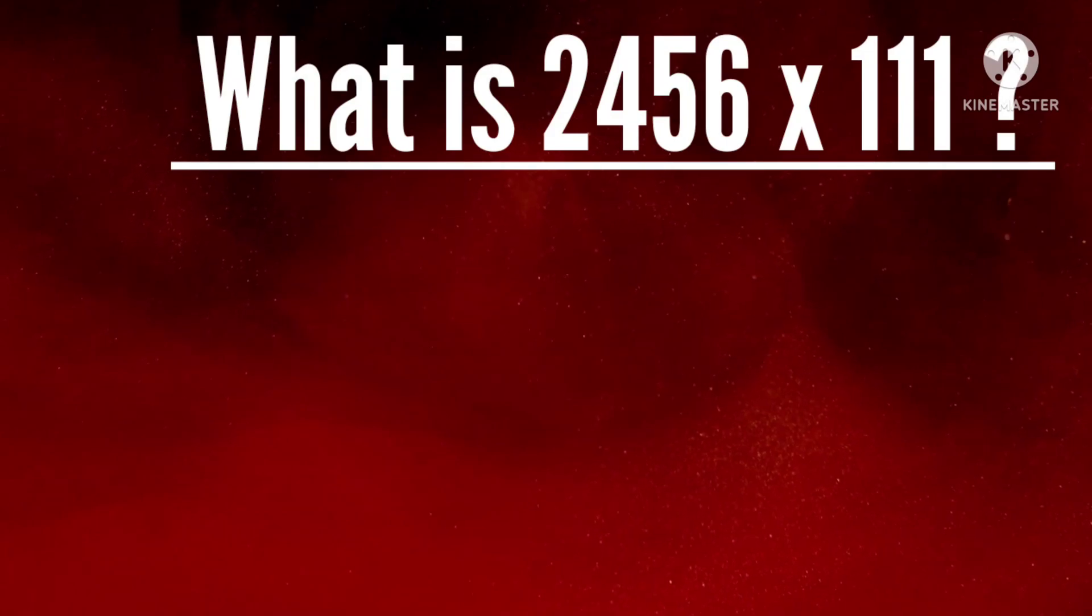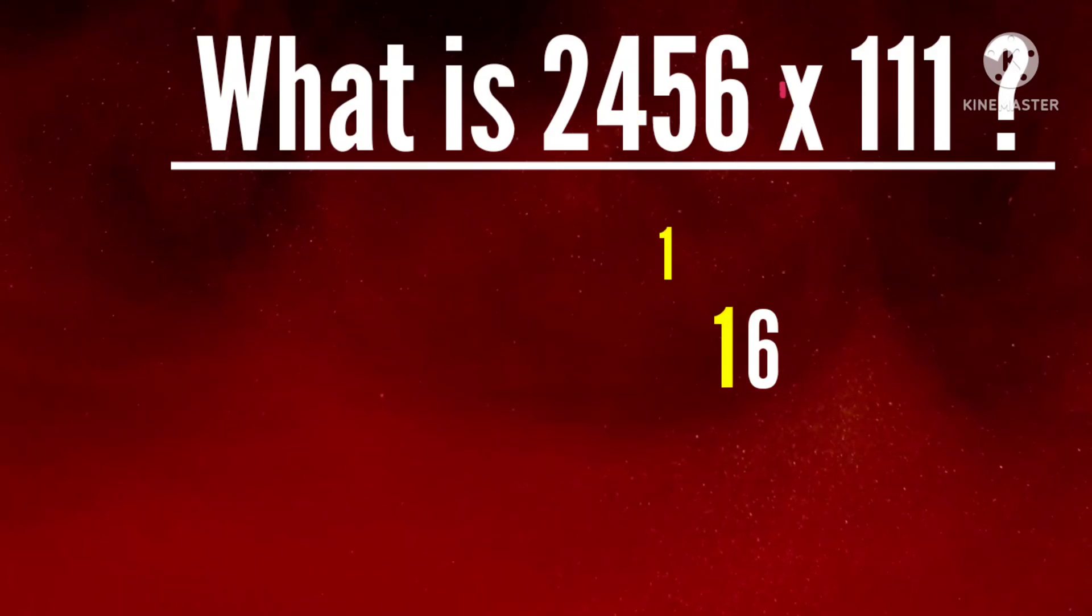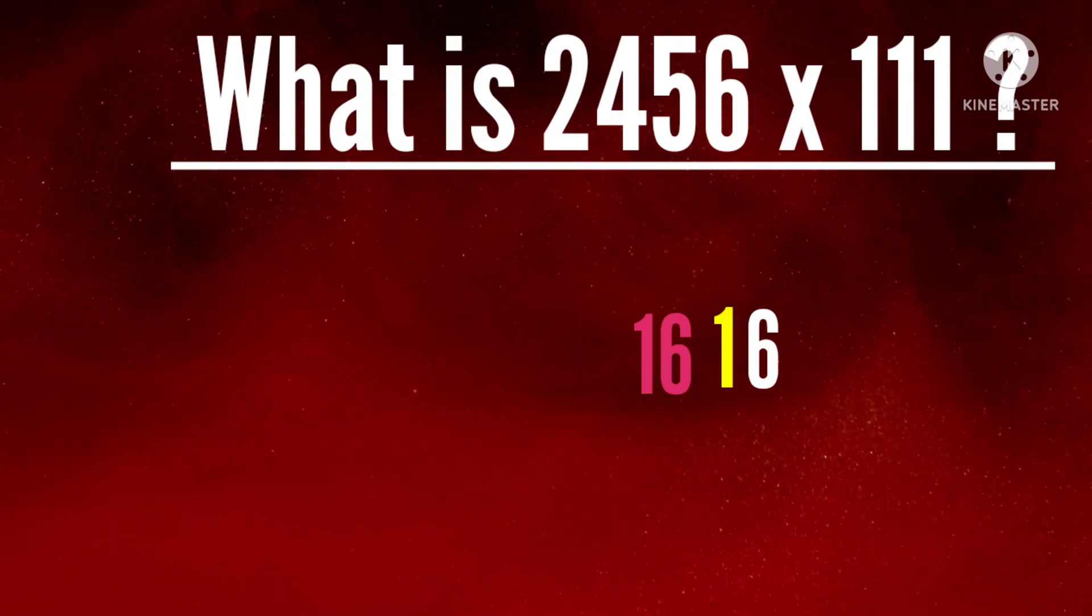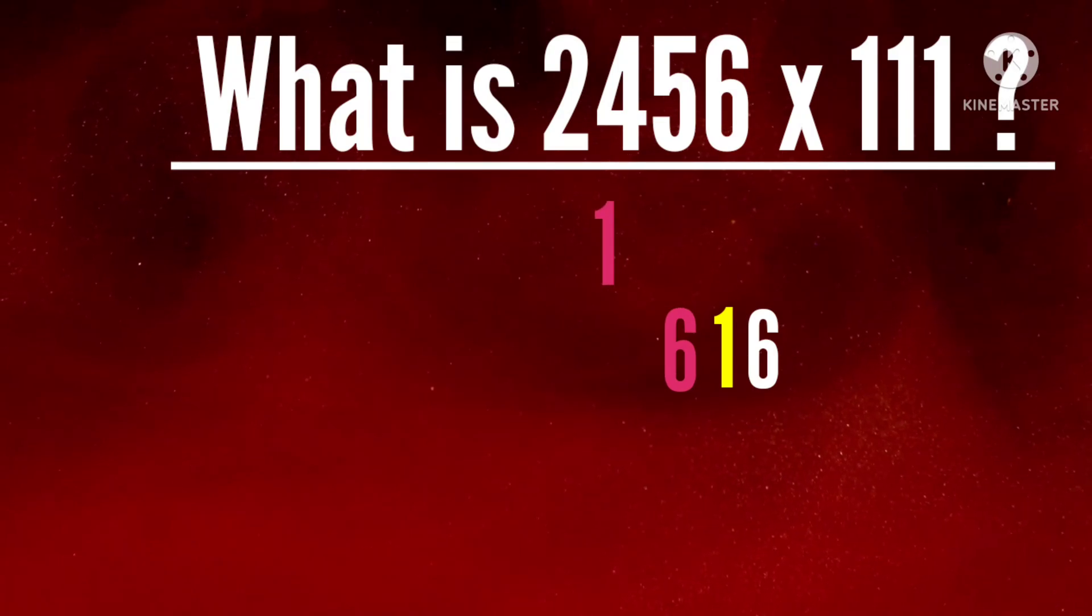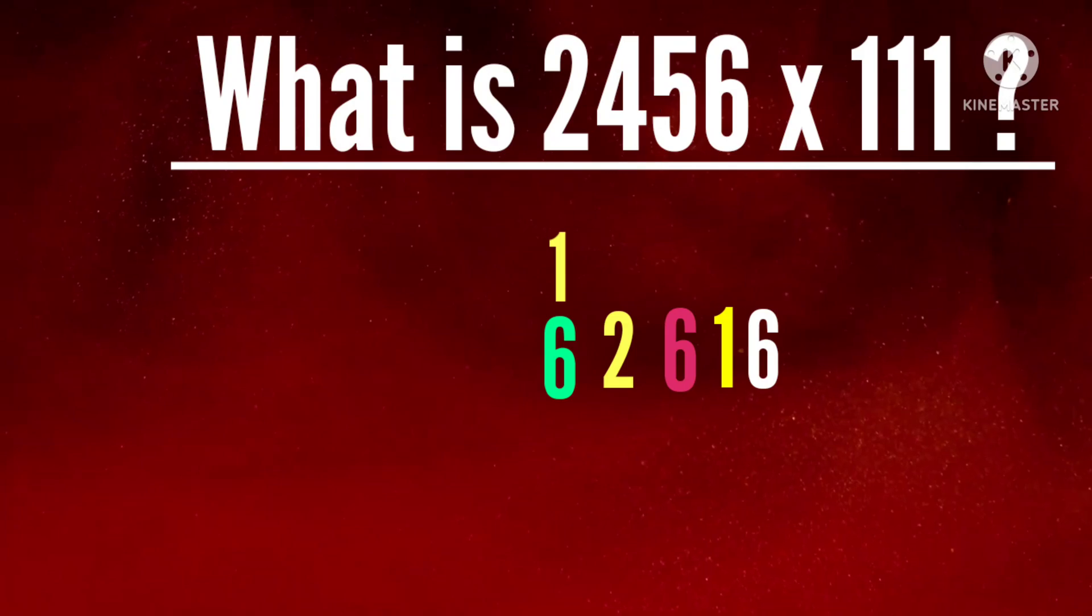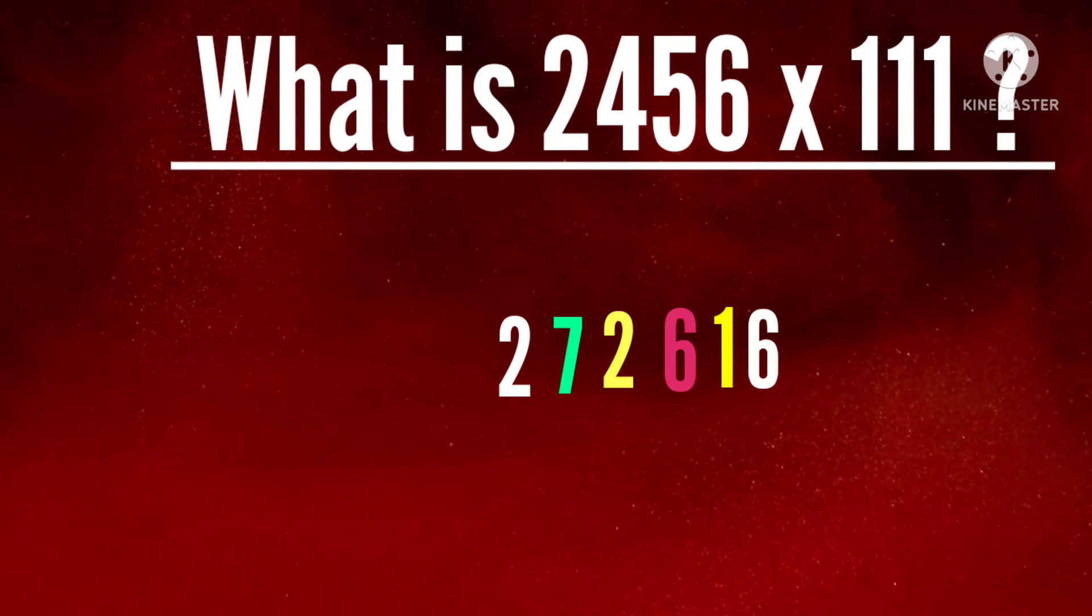What is 2456 multiply by 11? First, write unit place 6. Then add 5 and 6, get 11, one carry over. Add 4 plus 5 plus 6 is 15, plus 1 is 16, one carry over. Then add 2 plus 4 plus 5 is 11, 11 plus 1 is 12, one carry over. Then add 2 plus 4 is 6, 6 plus 1 is 7. Then write the first digit as it is, 2. Yes, your answer is 272616.